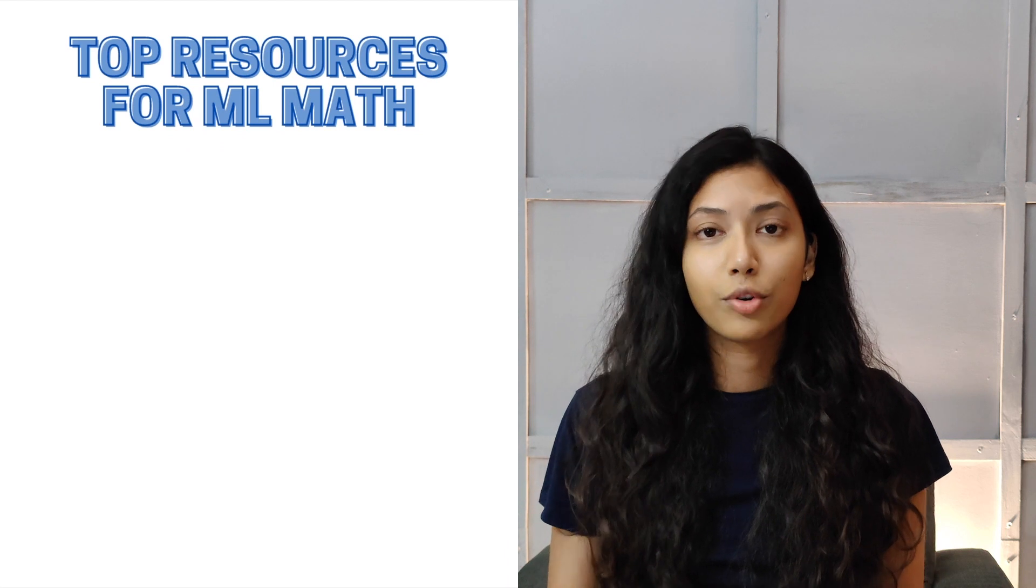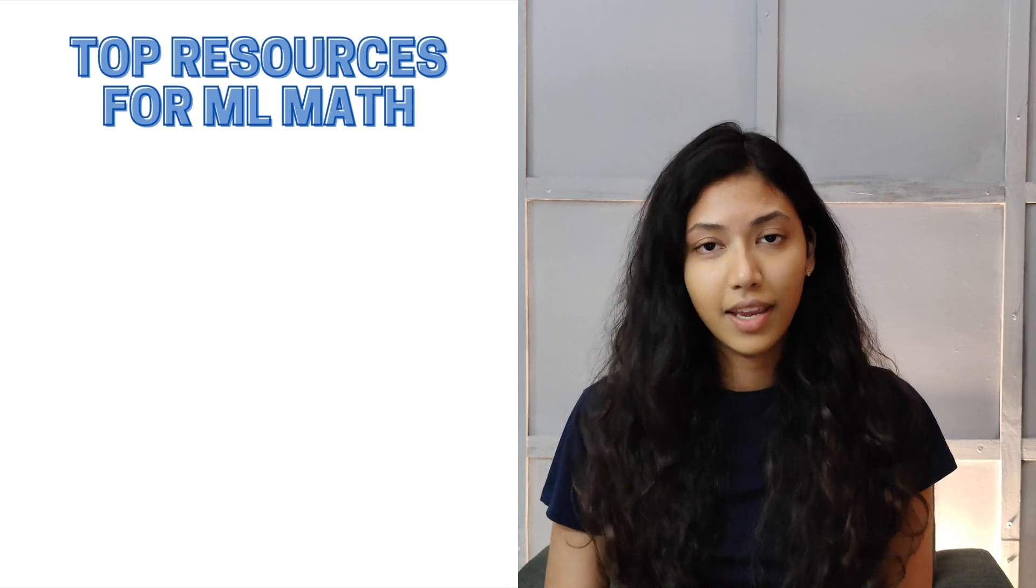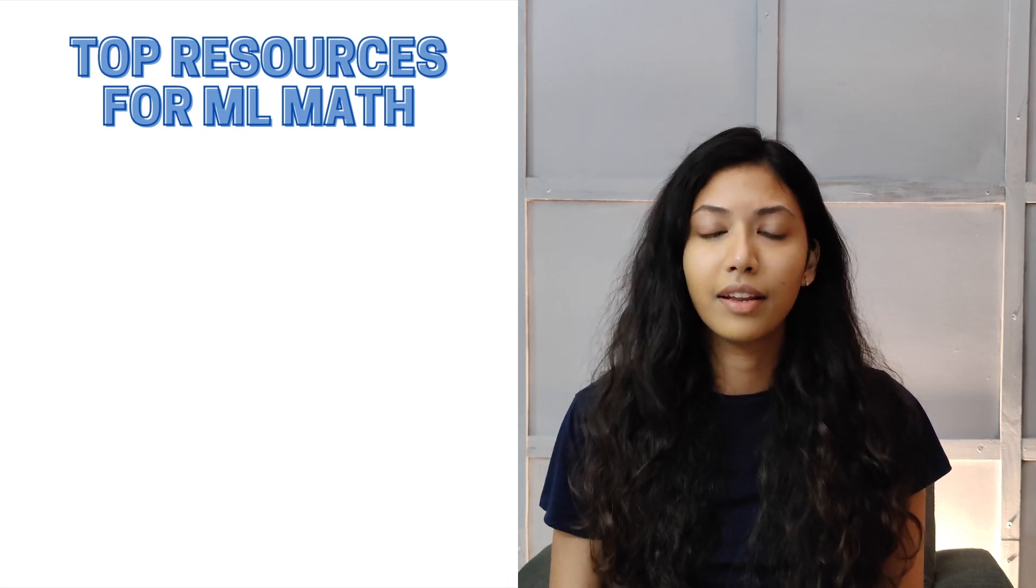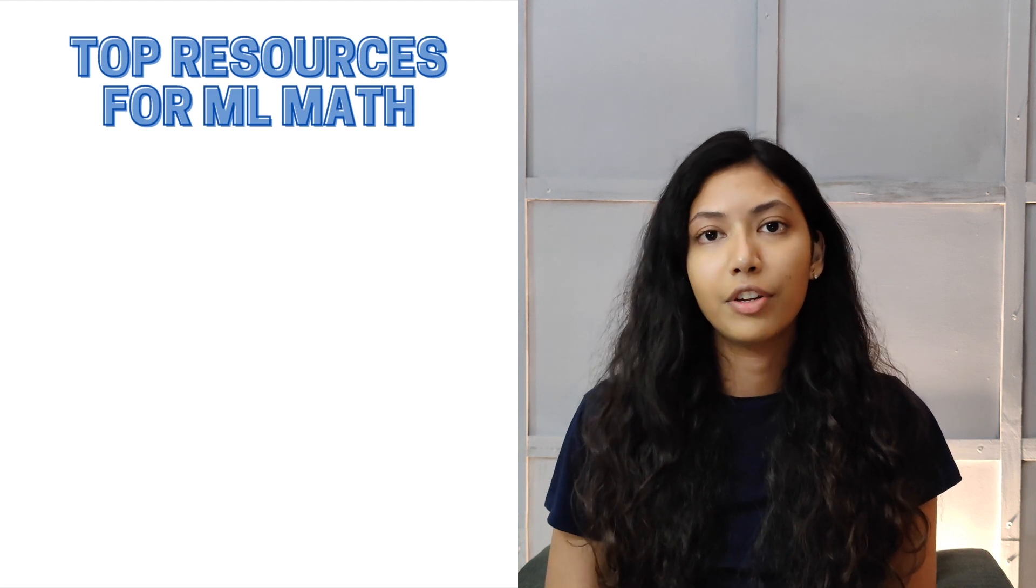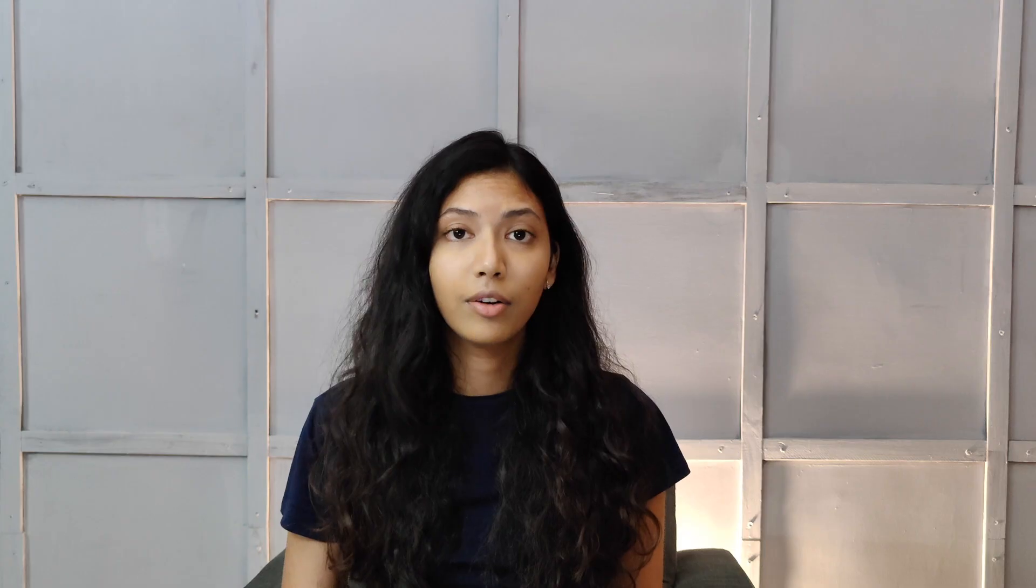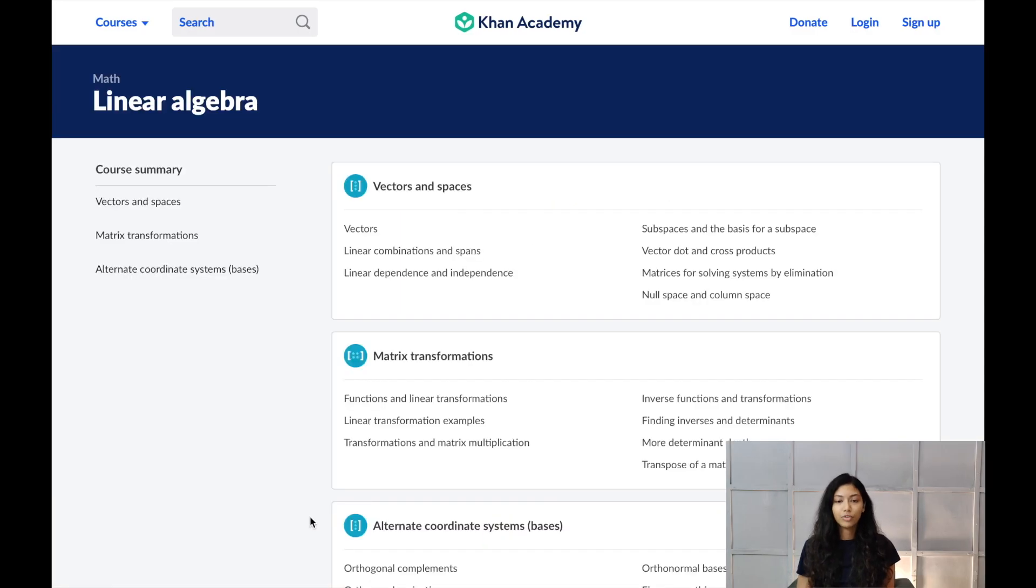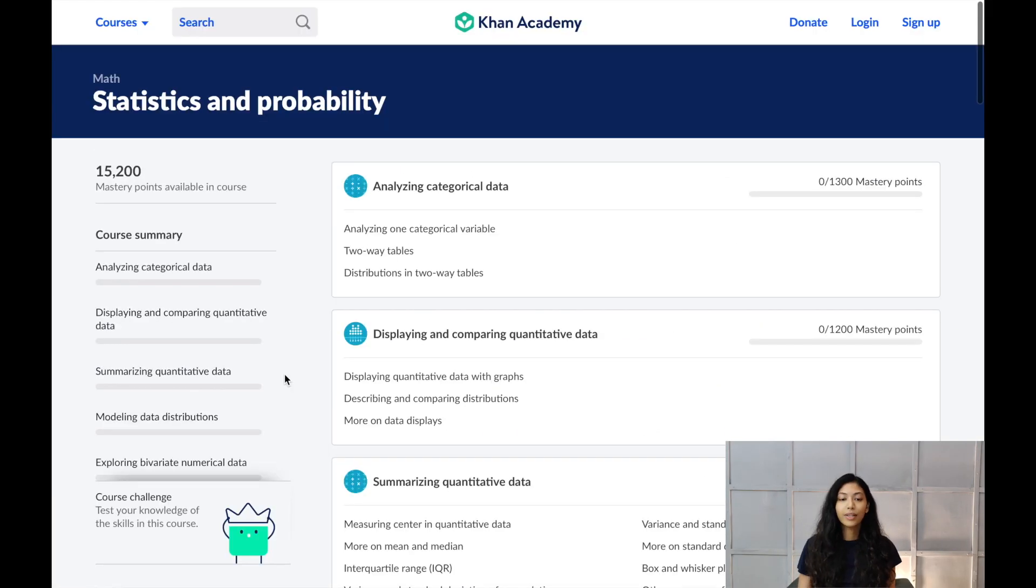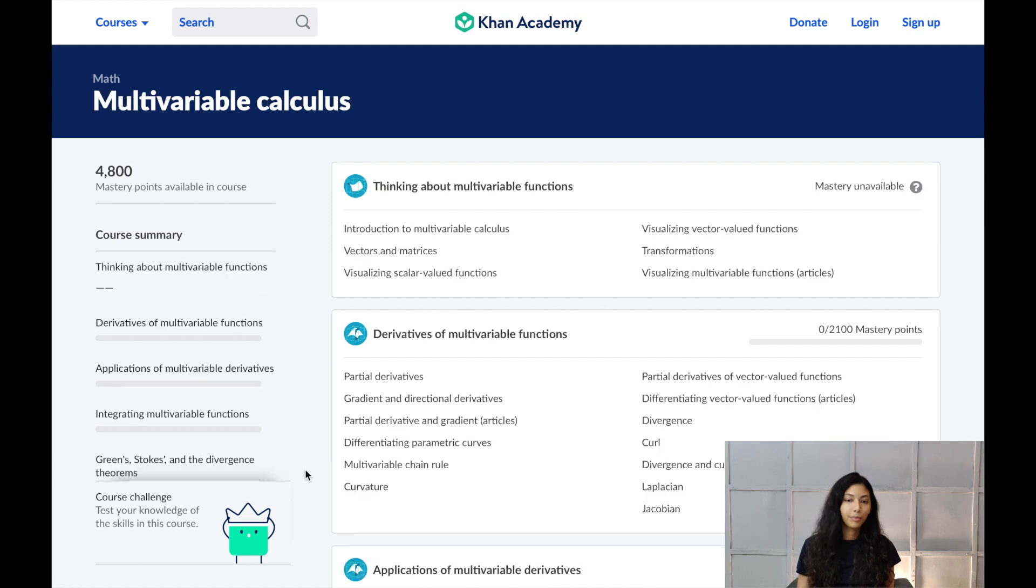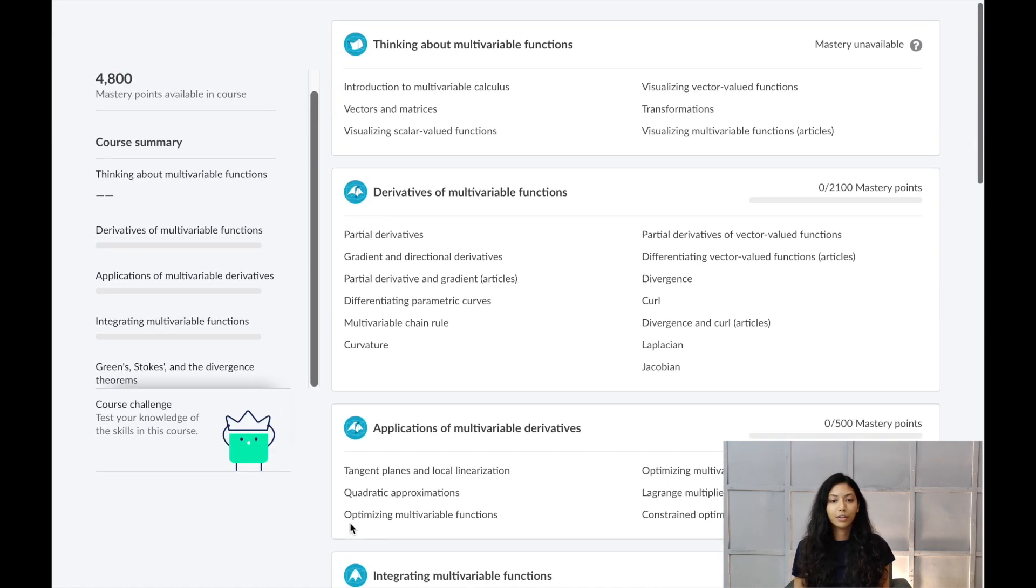Let's take a look at some of the best courses that you can take to learn all of this basic level math which is necessary for machine learning. If you're an absolute beginner and you're starting out with linear algebra, Khan Academy is an extremely good resource. In Khan Academy, you can also learn probability and statistics and multivariable calculus.